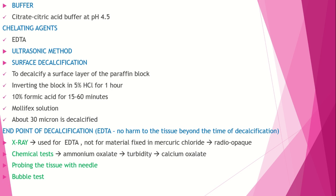When mercury chloride is used as a fixative, x-ray can determine the end point because mercury chloride makes the tissue radio-opaque. For the chemical test, ammonium oxalate is added to the decalcifying fluid — calcium reacts with ammonium oxalate to form calcium oxalate, confirming calcium presence. Probing checks tissue softness, and the bubble test is also used.